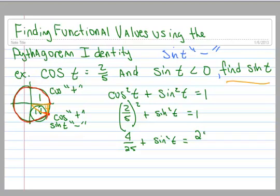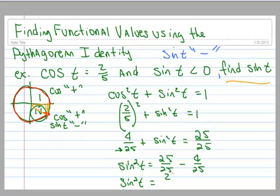4 over 25 plus sine squared of t equals 1. And I'm going to change my 1 into 25 over 25. That's just the same thing as 1. And I'm picking that because my denominator over here is 25. So now I'm going to subtract 4 25ths from each side. So I end up with sine squared of t equals 25 25ths minus 4 25ths. So sine squared of t, 25 minus 4 is 21. So I have 21 25ths.